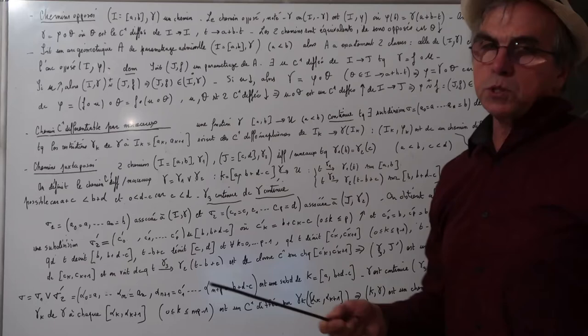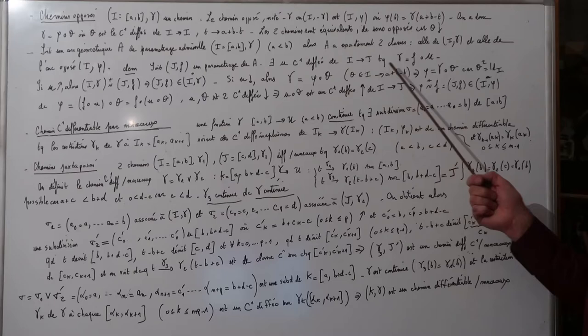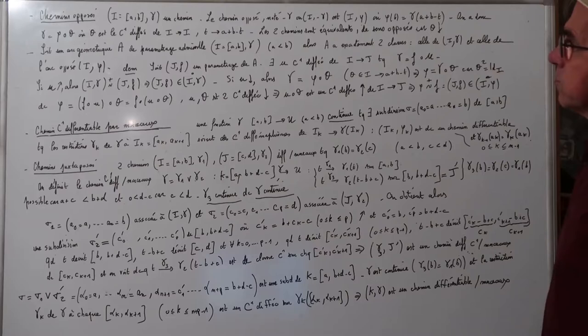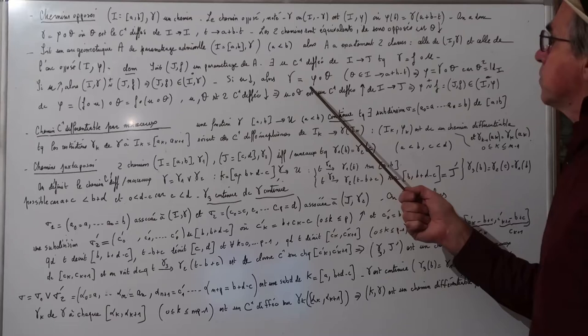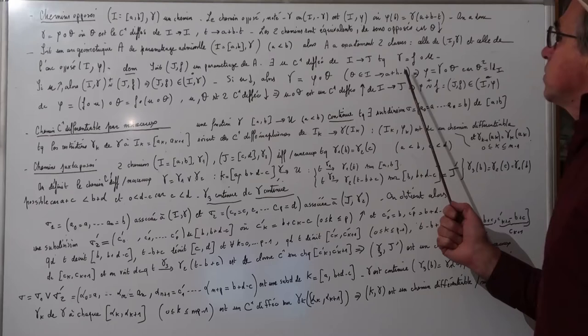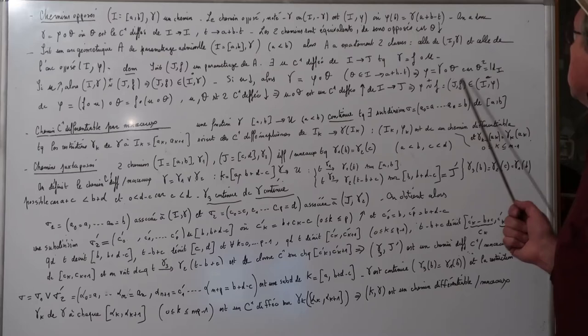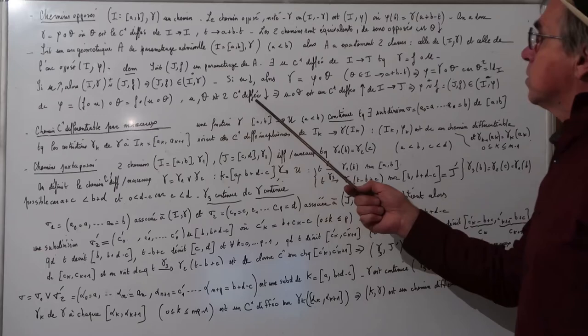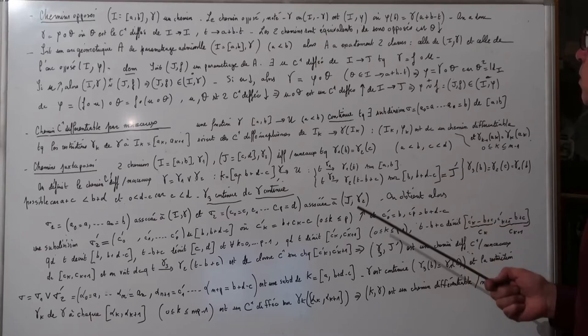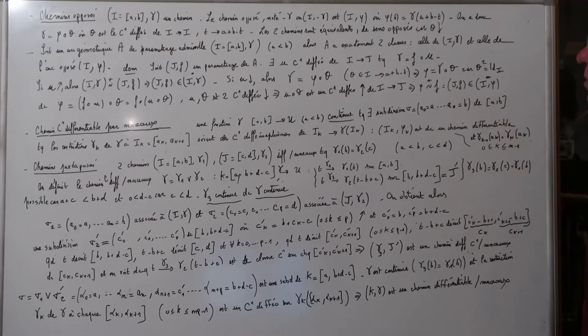Soit Jf un paramétrage de A ; il s'agit de montrer qu'il appartient à une des deux classes. Il existe un C1-difféomorphisme U de I tel que γ = f rond U. Si U est croissant, Iγ a le même sens que Jf, donc Jf appartient à la classe de Iγ. Si U est décroissant, j'écris γ = φ rond θ, donc φ = γ rond θ, et en remplaçant φ par f rond U, j'obtiens φ = f rond U rond θ. U et θ sont des C1-difféomorphismes décroissants, donc U rond θ est croissant, et donc Jf appartient à la classe de Iφ.